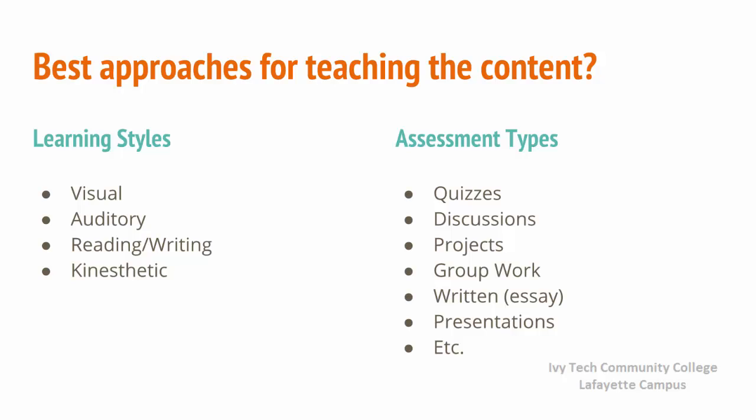The next question is: what are the best approaches for teaching the content? We always want to make sure that we're including learning activities that appeal to different learning styles — the primary styles being visual, auditory, reading and writing, and kinesthetic. We also want to vary the types of assessments we're using so that a student who struggles with one particular type is not at a consistent disadvantage. Some types of assessments that can be used include quizzes, discussions, projects, group work, written work, presentations, etc.